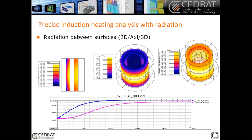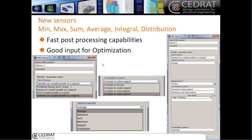As you can see here, a curve is plotted about an average value of temperature. In order to do this kind of curve, we added some new sensors inside the post-processing context. Now you can directly create a sensor that will evaluate the minimum, the maximum, the sum, the average, or the integral of a quantity on a specific support.